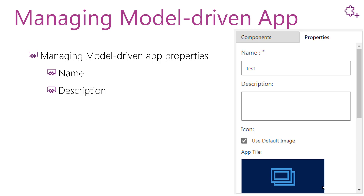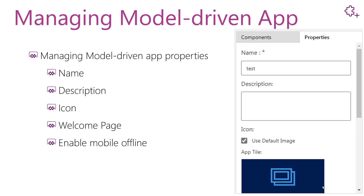Every model driven app has an icon. By default it sets the default image for the model driven app, and you can update this default image with your own. Besides that, you can choose a welcome page for your app and select one from the web resources that are available in your environment. You can also enable the app to be available offline on mobiles to the profiles that are selected. These are the properties that you can customize in a model driven app.